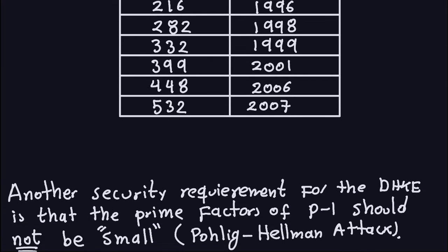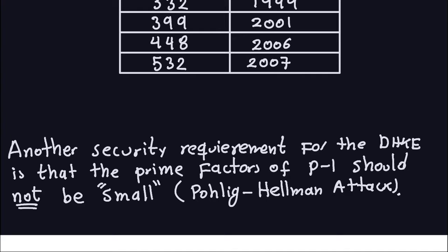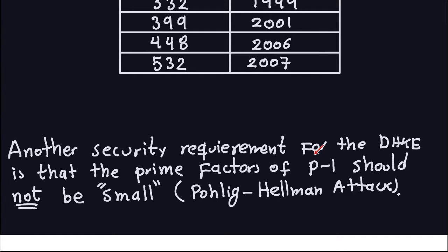Another thing you have to make sure of if you were to implement the Diffie-Hellman key exchange is that the prime factors of P-1 should not be small. If P-1 has prime factors which are small — on the order of, say, 512 bits — they will be vulnerable to attacks. One of those attacks is the Pohlig-Hellman attack, which basically computes discrete logs not in base P but in lower bases. So that is one of the security requirements: not only must the prime P be long, but the prime factors of P-1 cannot be small.